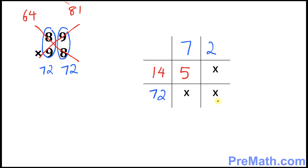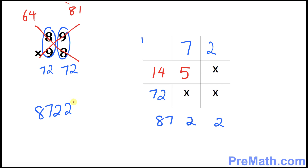Now add them up vertically: this is 2, this is 5, and 7 makes 12 — so you have a 1 as a carryover. 1 plus 14 plus 72 gives you 87. So your complete answer is 8722. That's pretty much it — thanks for watching, bye!